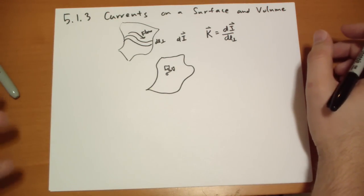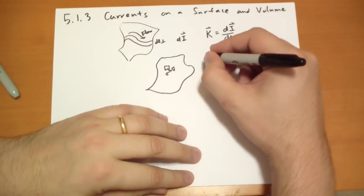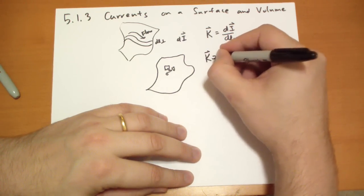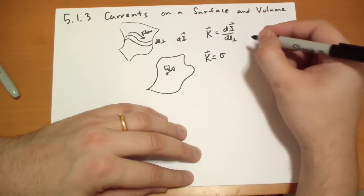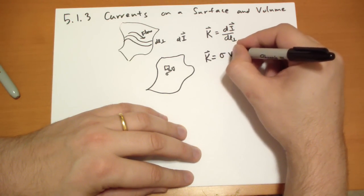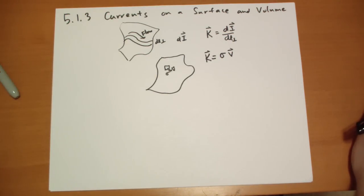And the rule is, of course, that the surface charge isn't going to accumulate or anything like that. So we can also express that as the surface charge density at that point times the velocity at that point.